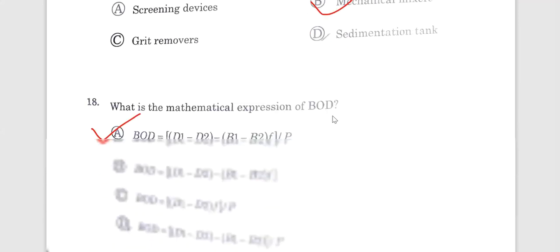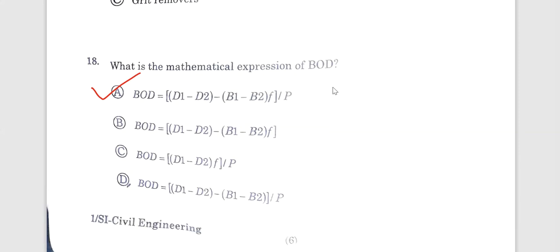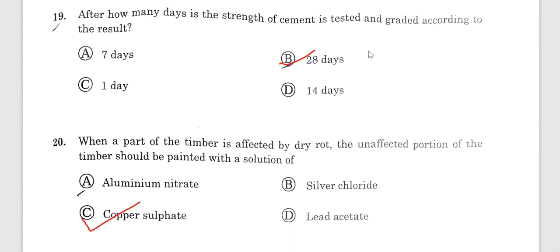Question number 18. What is the mathematical expression for BOD? BOD is nothing but D1 minus D2 minus B1 minus B2 into F divided by P. Option A is correct. BOD is equal to D1 minus D2 minus B1 minus B2 into F whole divided by P. Question number 19. After how many days the strength of the cement is tested and graded according to the results? 28 days mainly cement is tested.